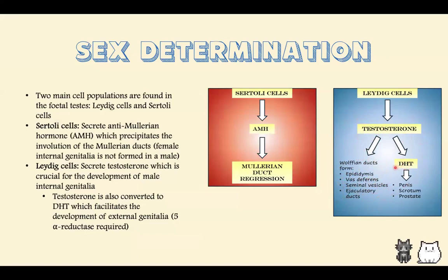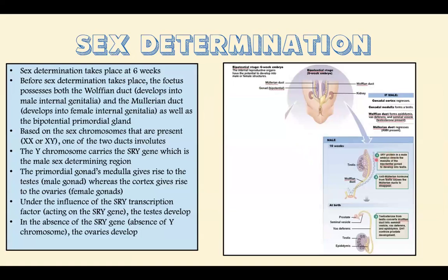Testosterone is converted to dihydrotestosterone by 5-alpha reductase, and dihydrotestosterone affects the development of the external genitalia — the penis, scrotum, and prostate. The SRY protein in the male embryo directs the bipotential gonad medulla to develop into testes. Anti-Müllerian hormone from Sertoli cells causes the Müllerian duct to regress. Testosterone from Leydig cells converts the Wolffian duct into the seminal vesicles, vas deferens, and epididymis. Dihydrotestosterone forms the penis, scrotum, and prostate.